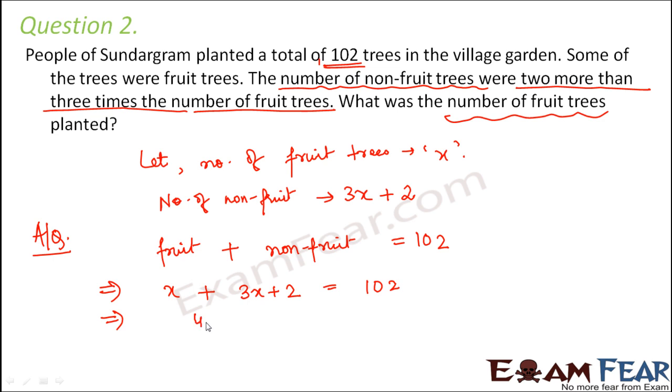So X plus 3X would be 4X plus 2 is equal to 102. So let's solve this to find out the value of X. So 4X will be equal to 102 minus 2. Or we can say 4X is equal to 100. Therefore, X is equal to 100 divided by 4. So we know that 4 into 25 is 100. Therefore, X is equal to 25. And what was X? X was the number of fruit trees. So the number of fruit trees planted is 25.